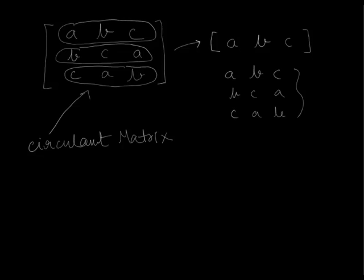Even if you want to look column-wise, you can see the first column ABC corresponds to the first circular permutation, the second column corresponds to the second permutation BCA, and the third column corresponds to the third circular permutation. So this is indeed a circulant matrix.